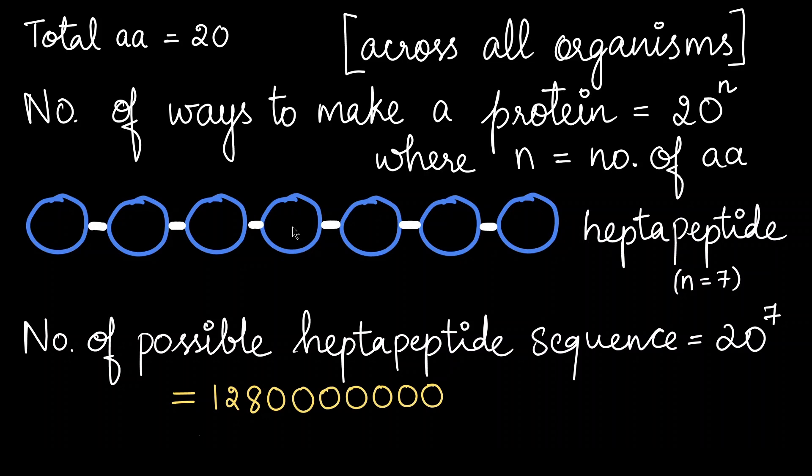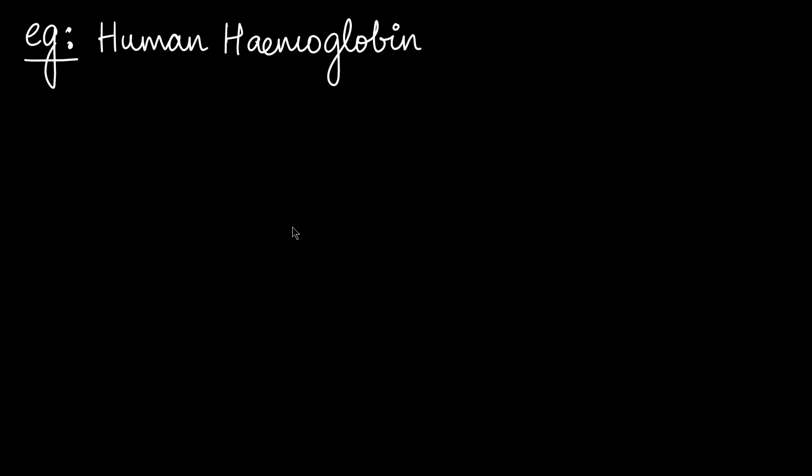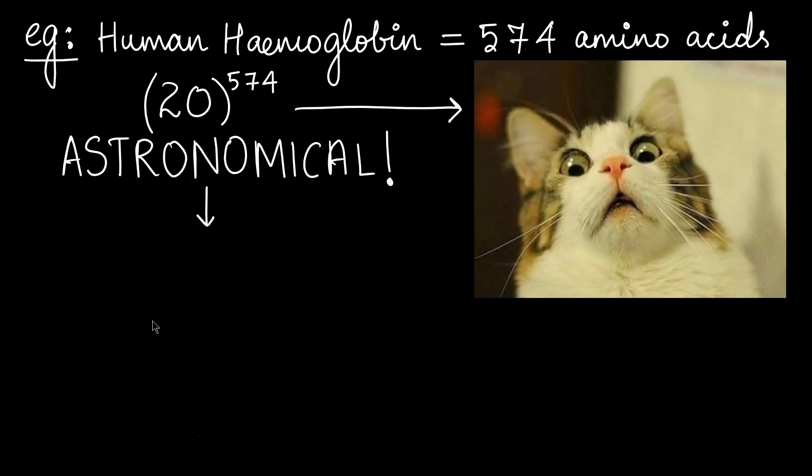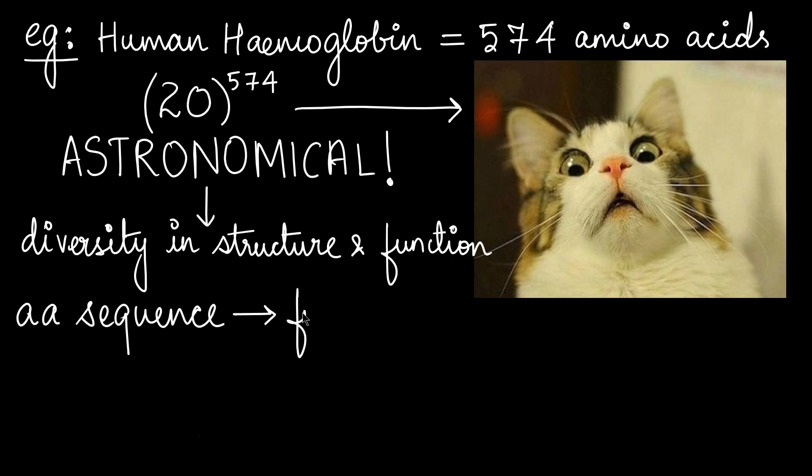Let's look at an actual protein as an example. Human hemoglobin has 574 amino acids, so the total number of possible combinations in which the sequence can result is 20 to the power 574. It makes sense because it gives the vast diversity of protein in terms of its structure and function. It is the initial amino acid sequence which determines what the final shape of the protein is going to be.